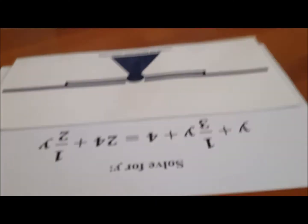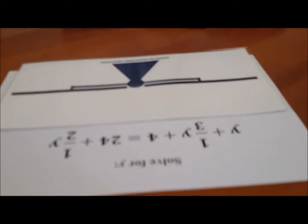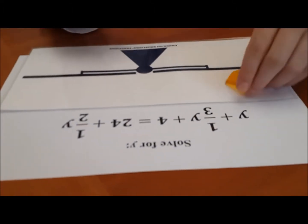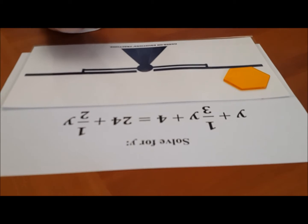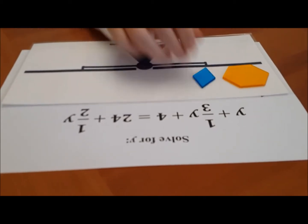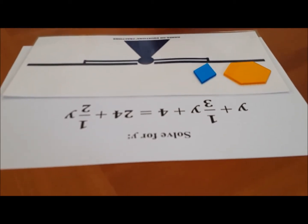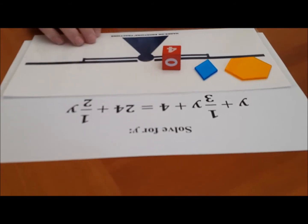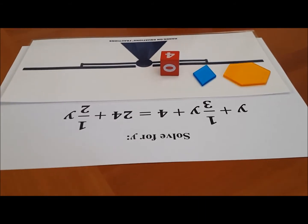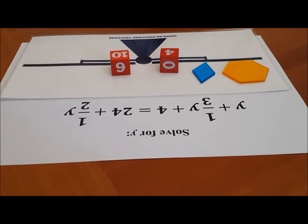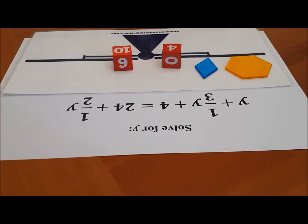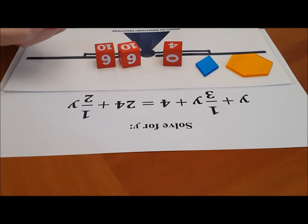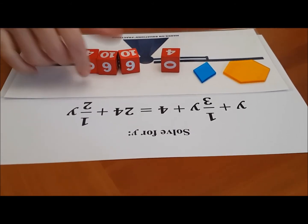Ishai, I'd like you to help me with this equation, please. So would you set it up for us? So we have one y, plus a third of y, plus four values. And on the other side we have 24 values, plus half of y.